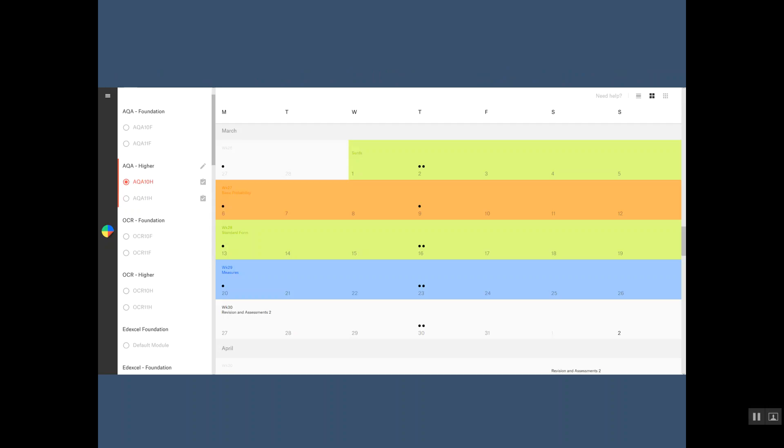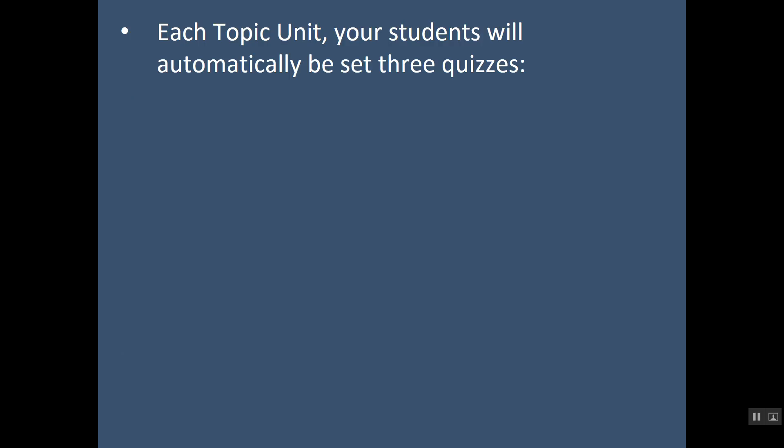Here's a little overview of our scheme so you'll see that it's made up of lots of different colors here. Those colors represent different topic units so we've got flipping out marches looking delightful here. We've got some surds, probability, standard form and measures and each of those dots represents quizzes that your students will automatically be set.